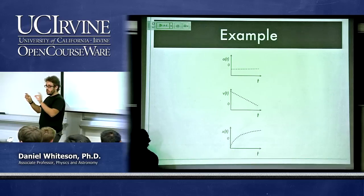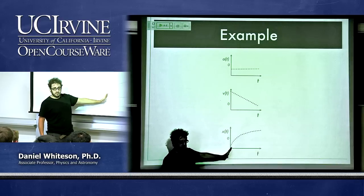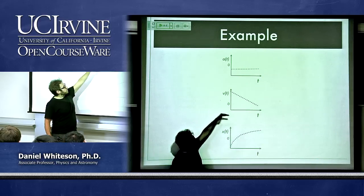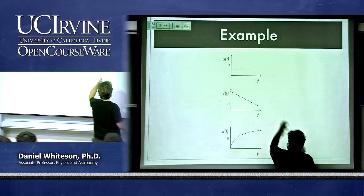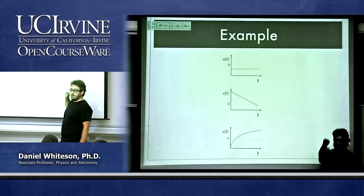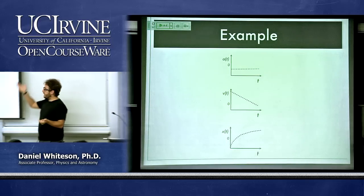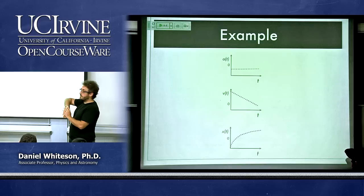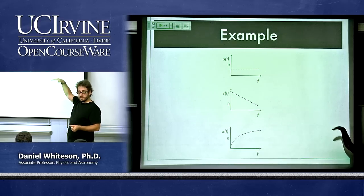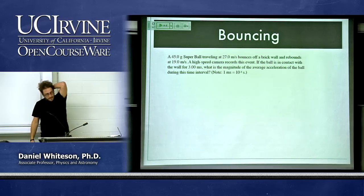You can also go the other direction: given acceleration, integrate to find velocity; given velocity, integrate to find position. To go from position to velocity, use the derivative; to go from velocity to position, use the integral — or antiderivative. Let's do an example problem: a 45-gram super ball traveling at 27 m/s bounces off a brick wall and comes back at 19 m/s. A high-speed camera shows it's in contact with the wall for 3 milliseconds.